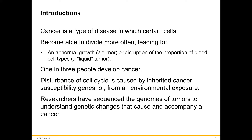One in three people will develop cancer. Disturbance of the cell cycle is caused by inherited cancer susceptibility genes or from environmental exposure. Researchers have sequenced the genomes of tumors to understand the genetic changes that cause and accompany cancer. The fact that one in three people will develop cancer tells us we really need to increase awareness and funding for cancer research and treatment.